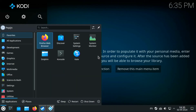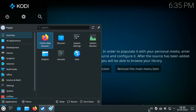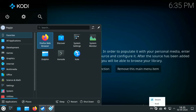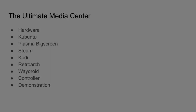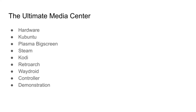The inhibit setting applies to individual Steam games but not to individual RetroArch games. To summarize: we installed Kubuntu with Plasma Big Screen, then installed Steam, Kodi, and RetroArch, and made everything gamepad compatible. All that's left is to enjoy the demo — see you in the next video!